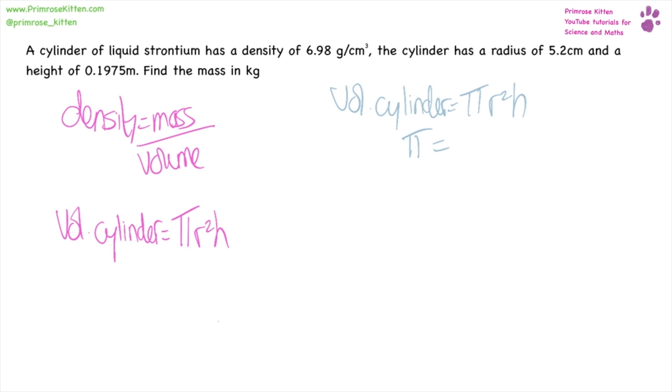So pi we know is 3.14, r we know is 5.2, and h is 0.1975 meters. And our radius is in centimeters and our density is in centimeters as well. Now, since this is an estimation question, what I'm going to do is round this slightly. So I'm going to take pi to be 3, I'm going to take the radius to be 5, and then I'm going to convert the 0.1975 meters into 19.75 centimeters, and then I'm going to take that as 20 centimeters since this is the estimation.